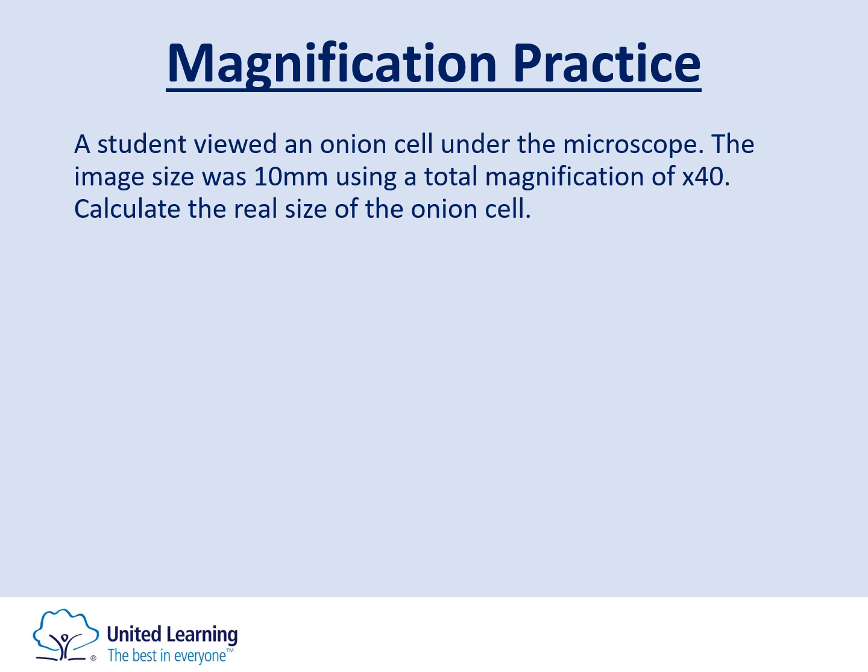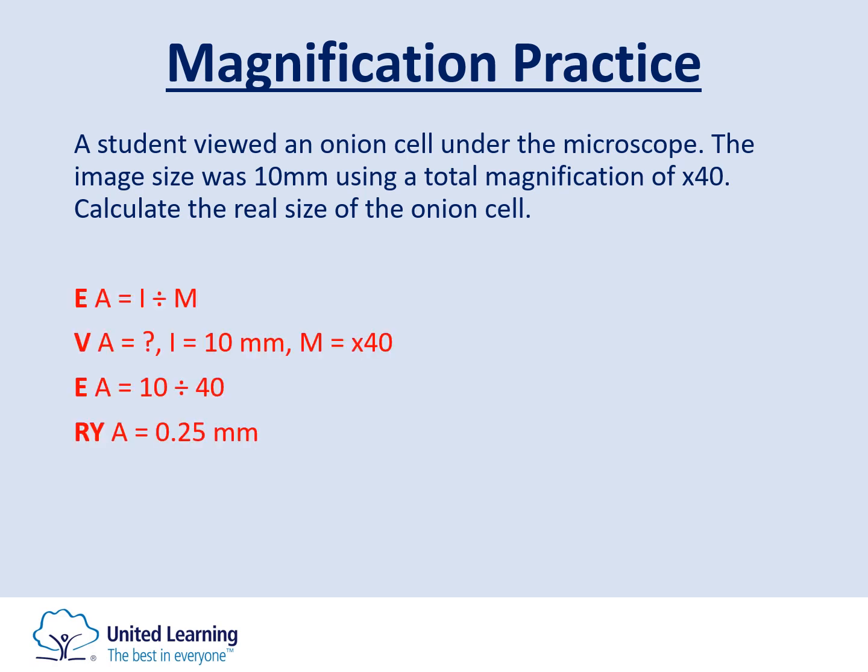The first E of the EVERY method shows your rearranged equation — include this in your working to gain marks. The V stands for values: the image size is 10 millimeters and the magnification is 40x. Plugging those in: A equals 10 divided by 40, giving an overall result of 0.25 millimeters. Make sure to include your units.